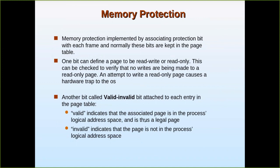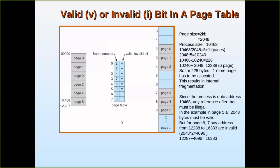The valid/invalid bit is attached to each entry in the page table. A valid bit for a page, say page zero, means it is present in main memory. If the valid bit is set to zero, that indicates the particular page is not present in main memory and address mapping cannot be done, so an error will occur. Valid indicates the associated page is in the process's logical address space and is a legal page. Invalid indicates the page is not in the process's logical address space.